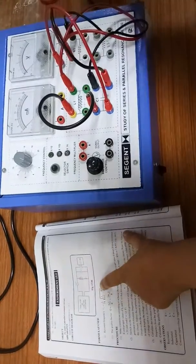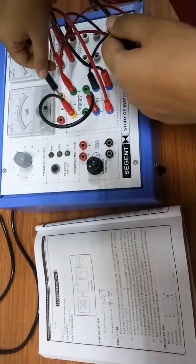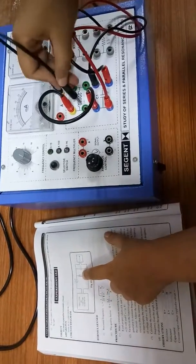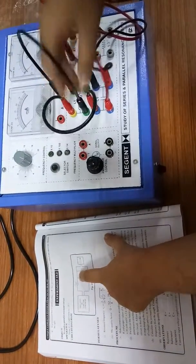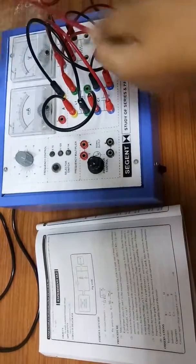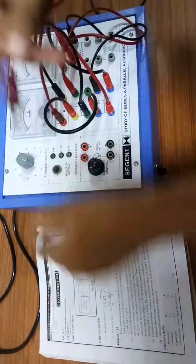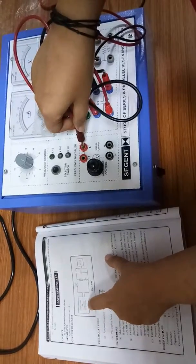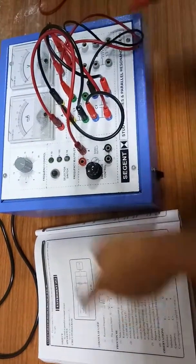Lastly, we'll have an ammeter. The second terminal of the ammeter is connected to the first terminal of the inductor, and then the first terminal of the ammeter is going to the first terminal of your oscillator function generator.